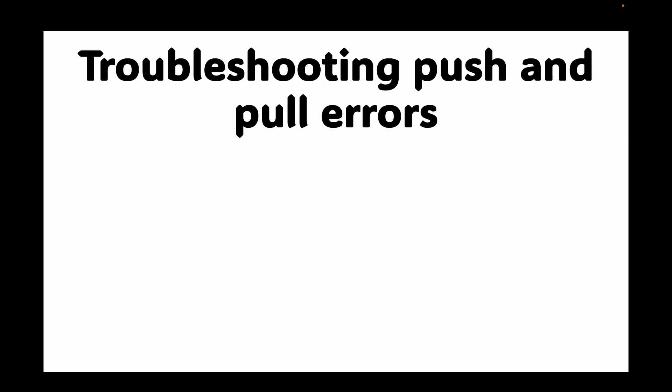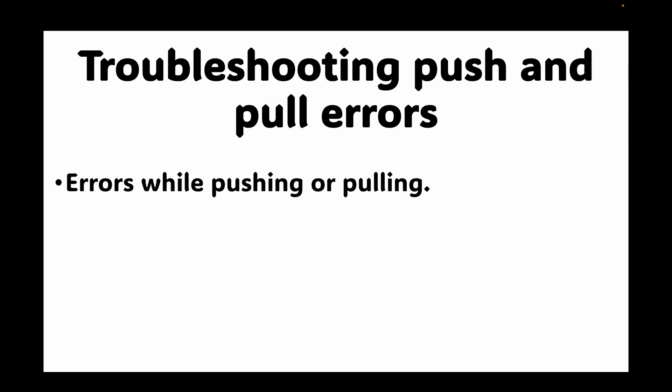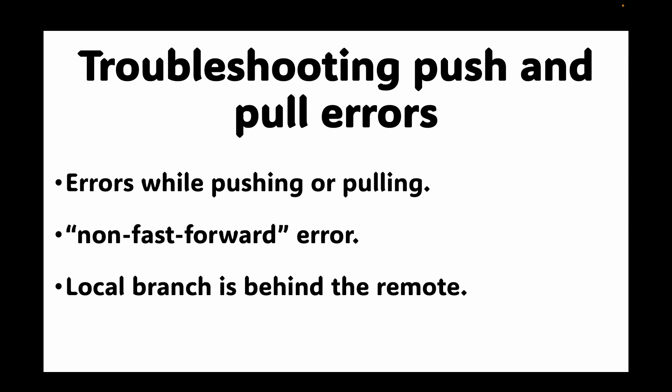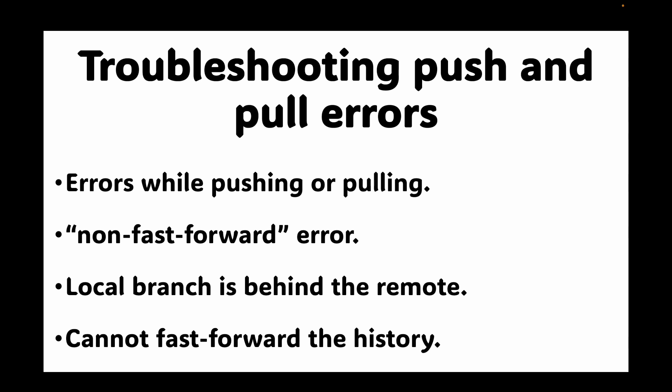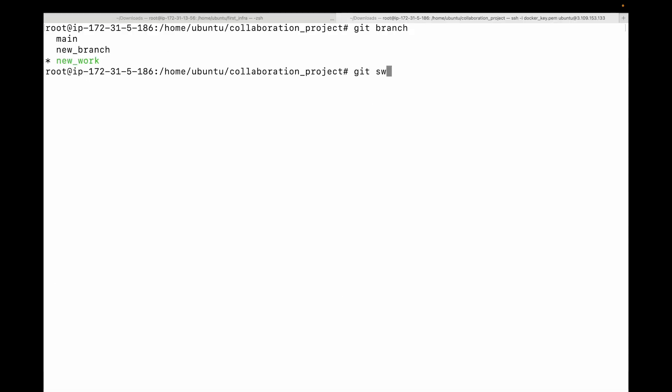Now let's talk about the third most common problem: troubleshooting push and pull errors. You often encounter errors when pushing or pulling changes. The most common is a non-fast-forward error, which means your local branch is behind the remote and git simply can't fast-forward the history.